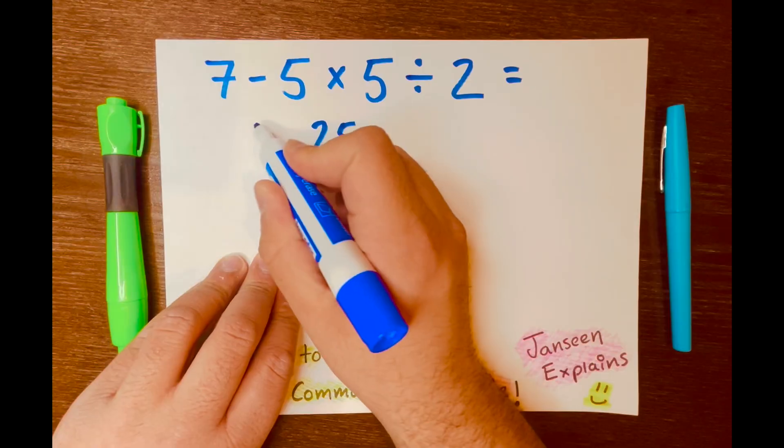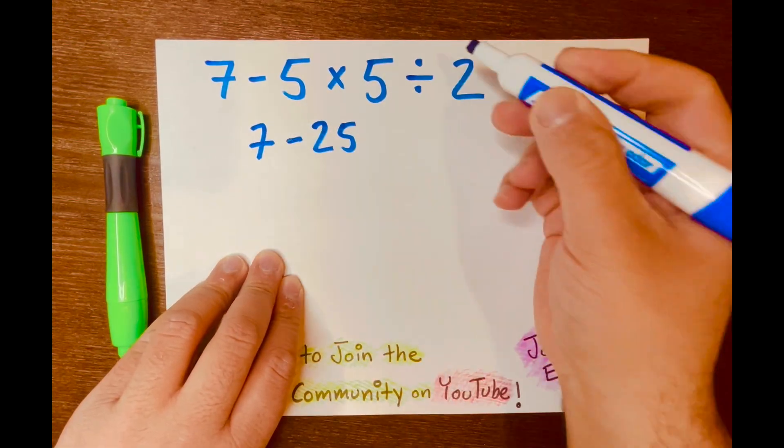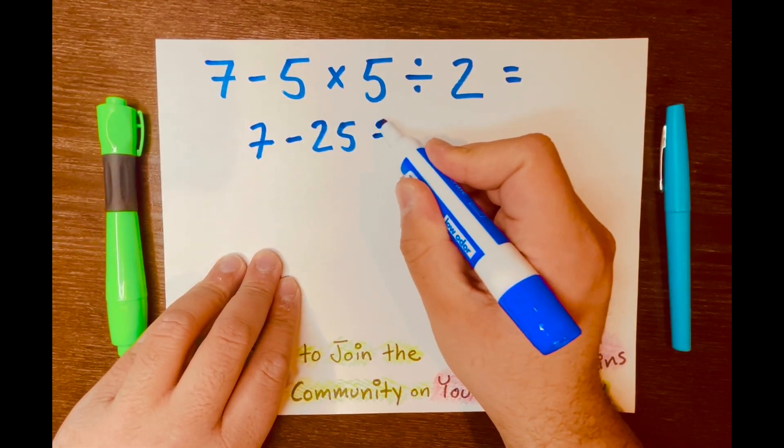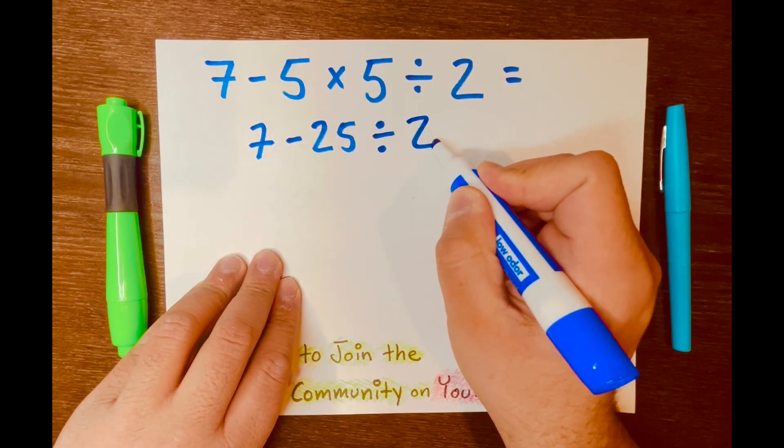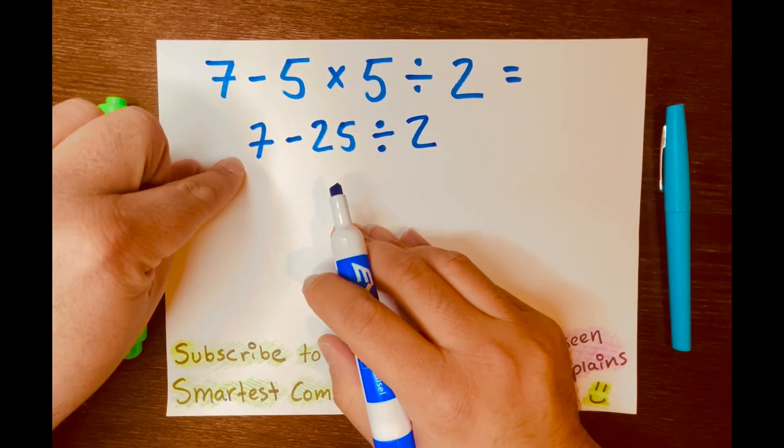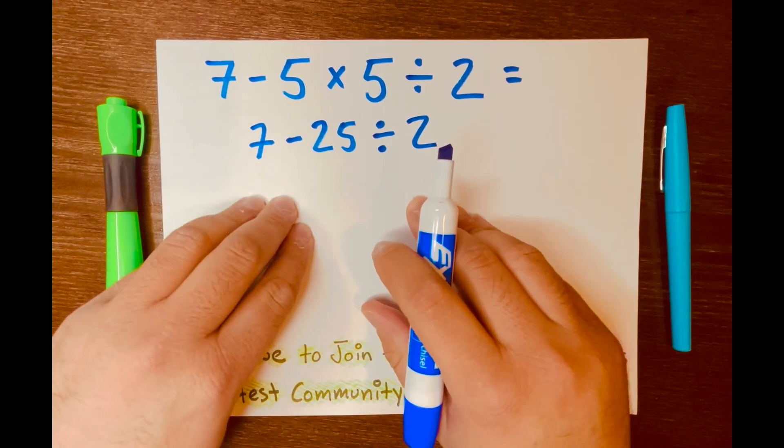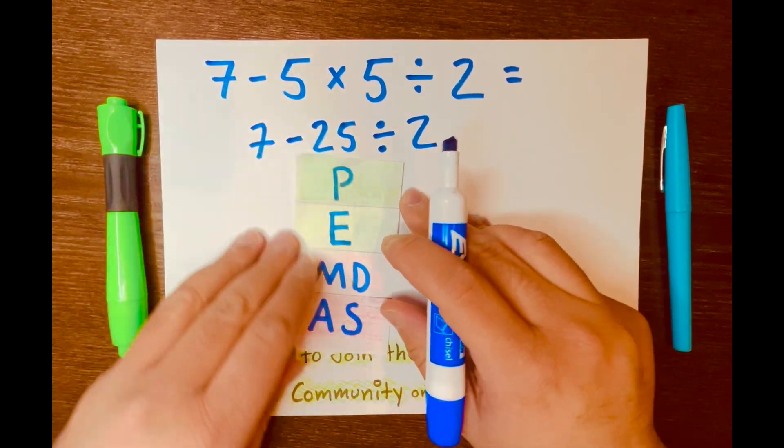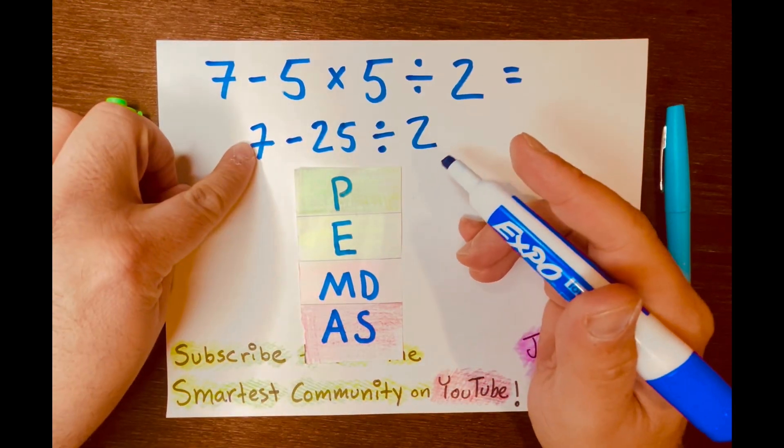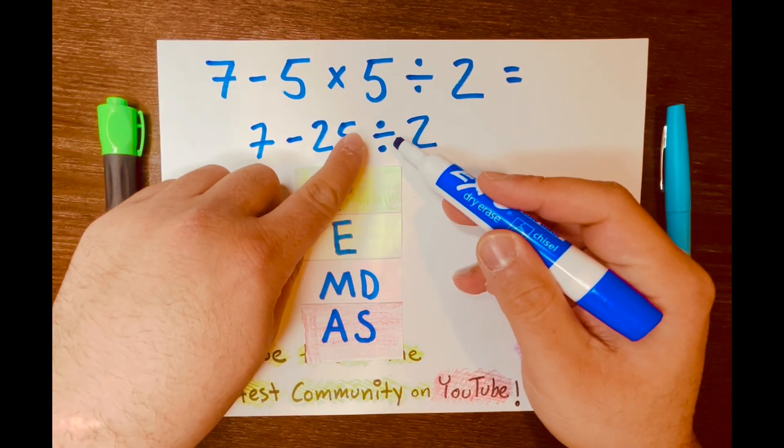Bring down the 7 minus, and then bring down the division symbol and the 2 down. Now we're looking at 7 minus 25 divided by 2. Looking at PEMDAS again, we're not subtracting, we are dividing.